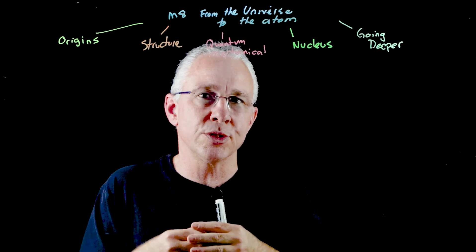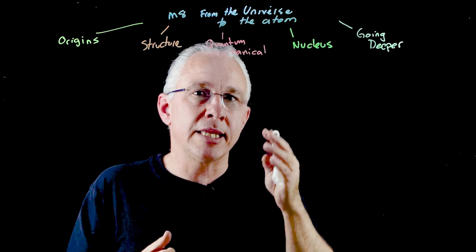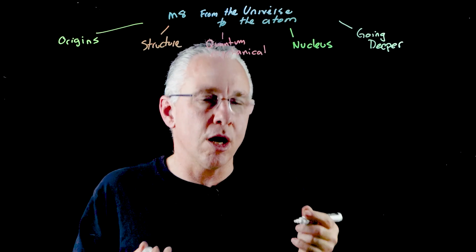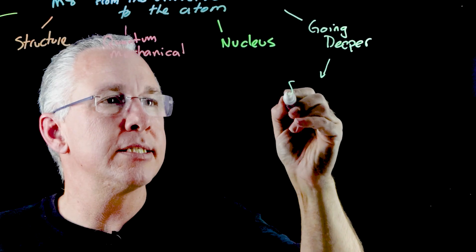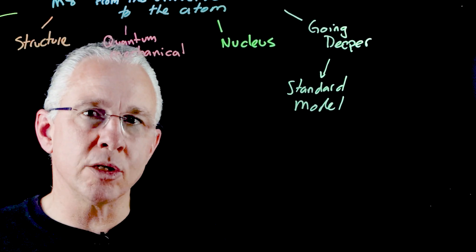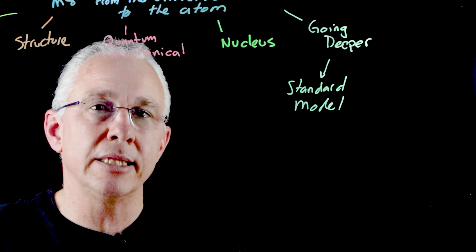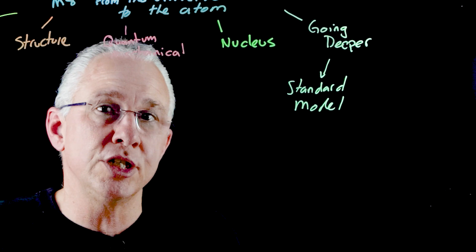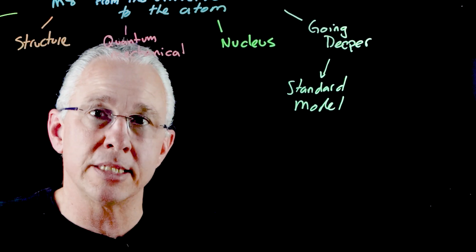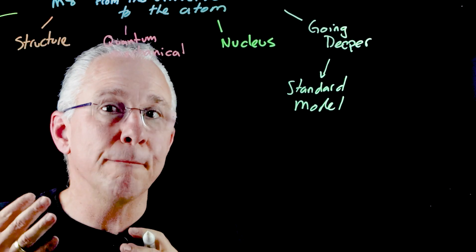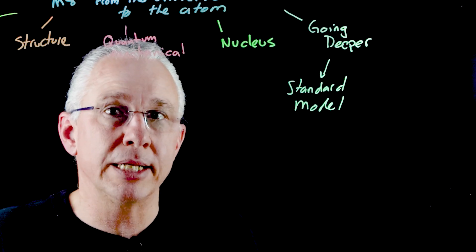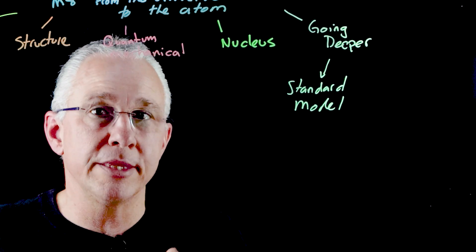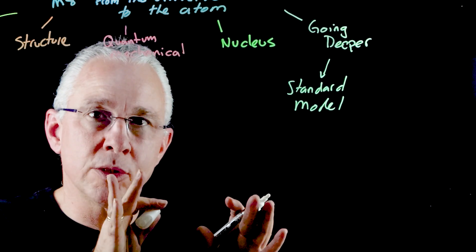Unfortunately, that model had limitations. Through the 1930s, 40s, and 50s came an explosion of particles discovered in particle accelerators that could not be explained by that model. This leads us to a newer model — what we now refer to as the standard model. The standard model is our current model for explaining the structure of the atom. In it, particles are made up of fundamental particles called leptons and quarks, and the forces between them are explained by particles we refer to as bosons.